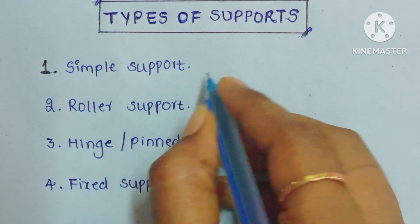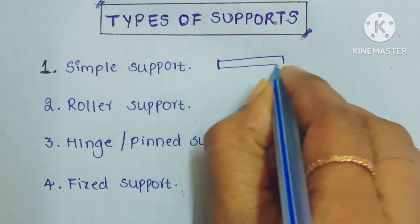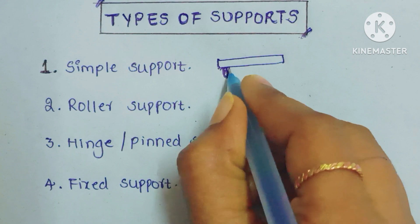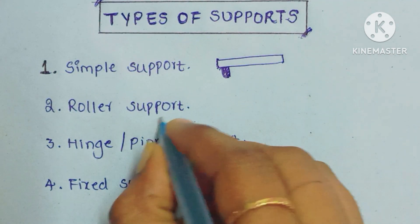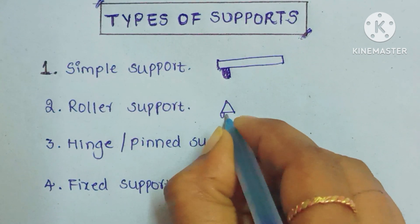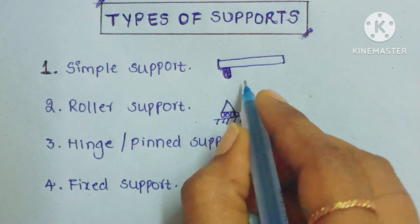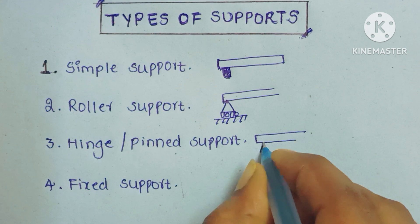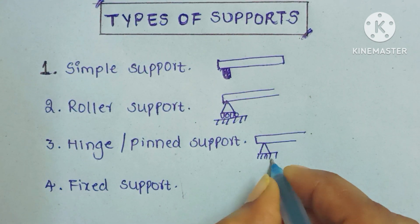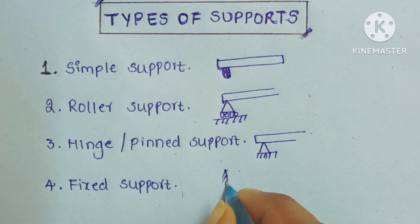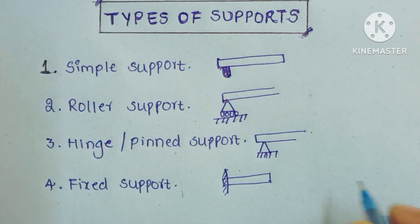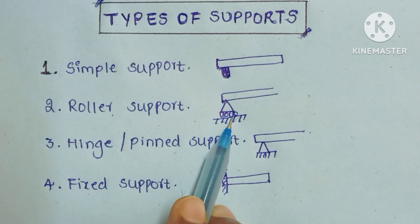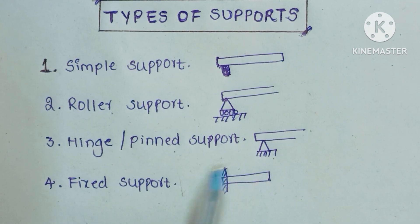Simple support can be shown as a beam resting on some member. Roller support can be expressed and indicated in a different way. Hinged support — if you take one beam, hinged support can be represented like this. For fixed support, this is the fixed end and here is the beam. Simple support, roller support, hinge or pin support, and fixed support can each be represented in these standard ways.